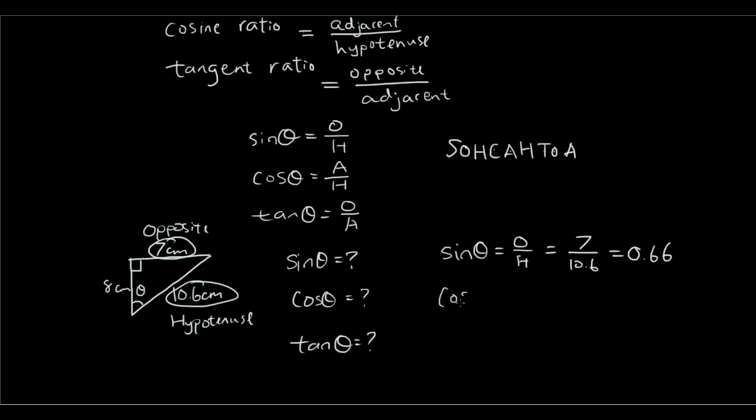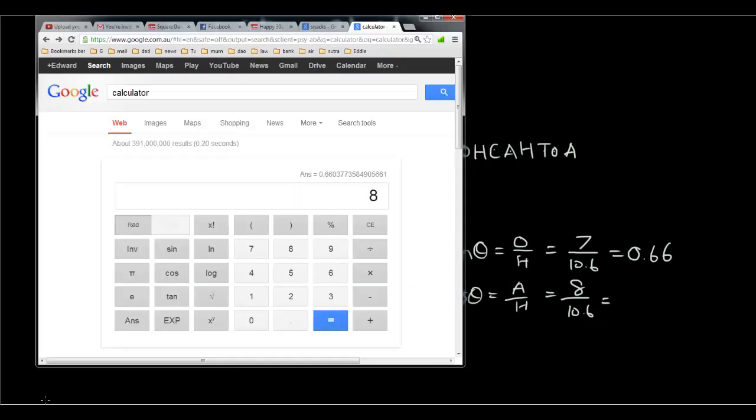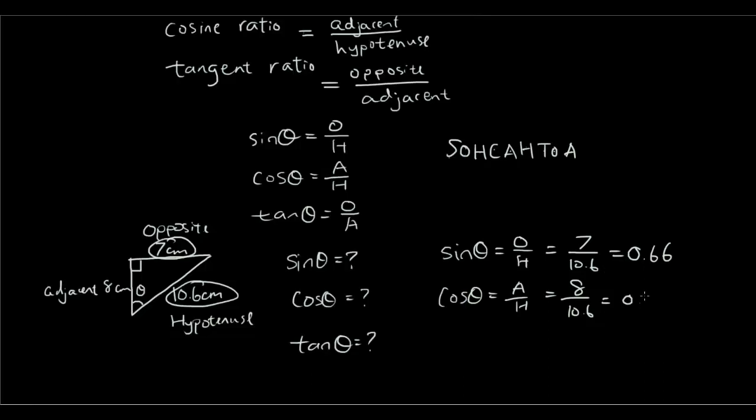The cosine ratio is a over h, and the adjacent side is here. So it's 8 divided by 10.6. Putting that in your calculator, 8 divided by 10.6, so that's 0.75, round it to two decimal places.